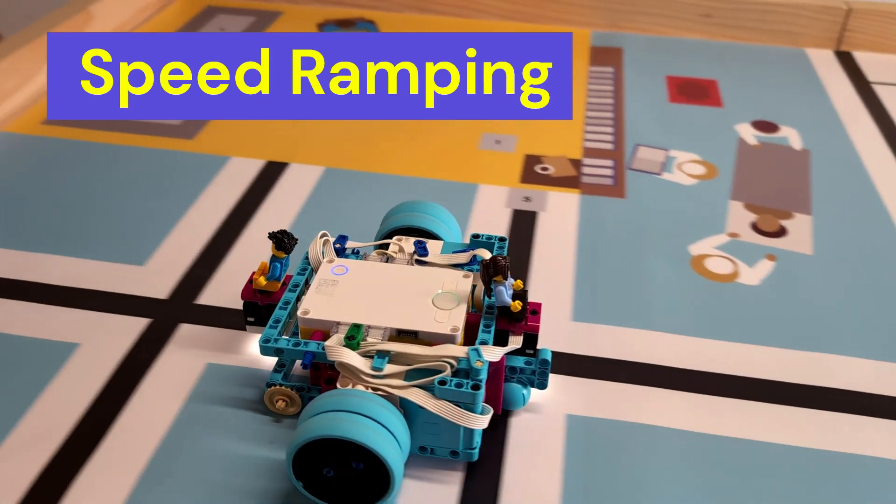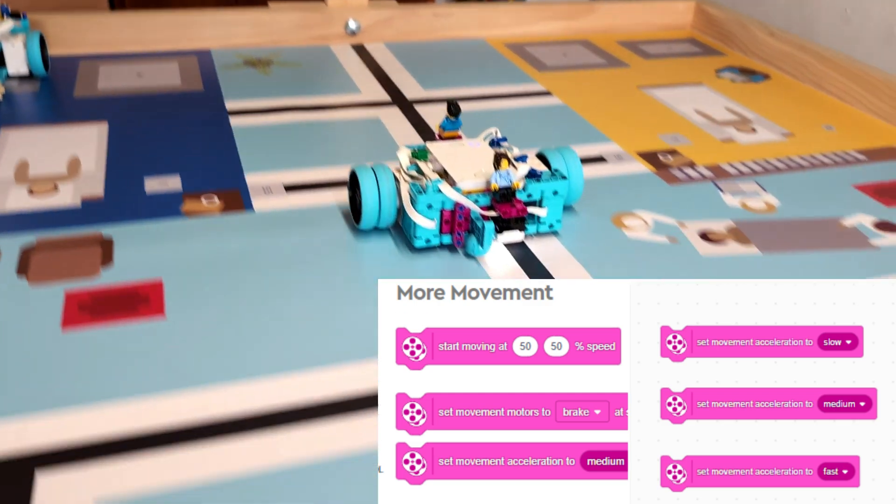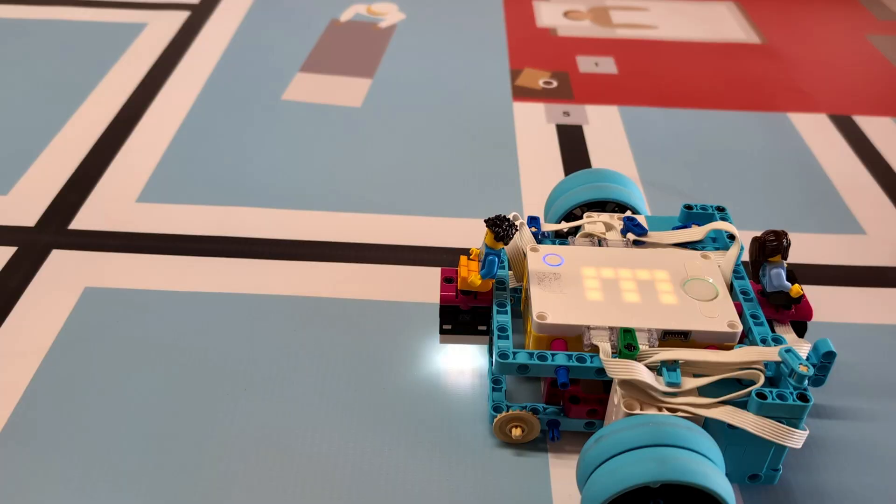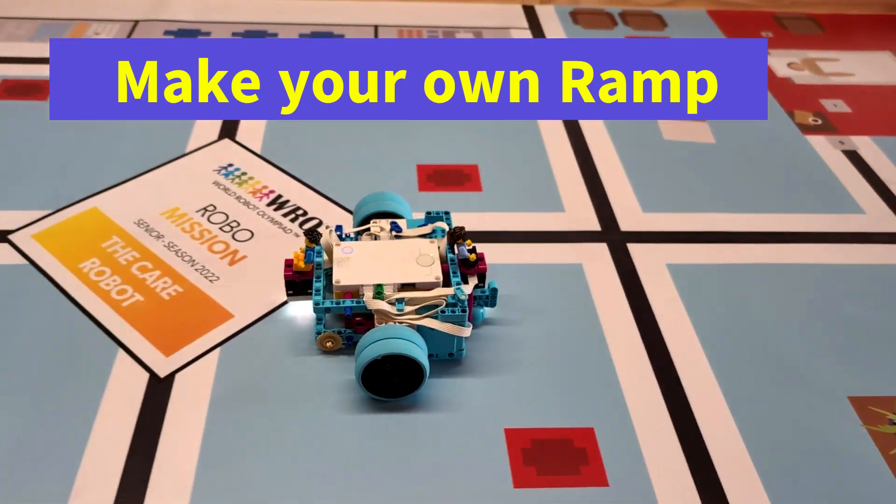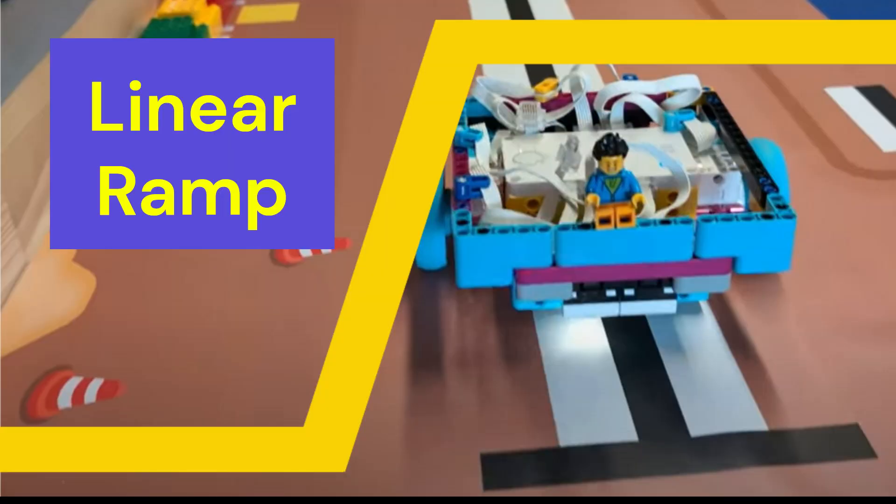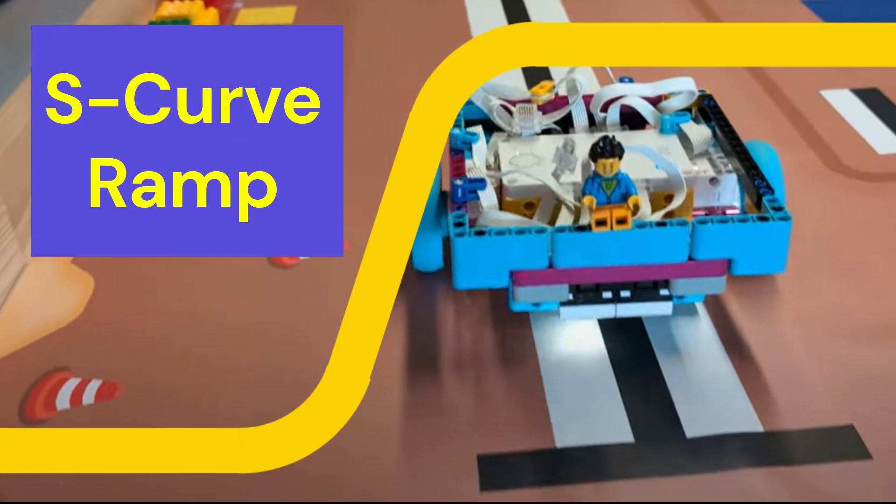You can do this simply by using the acceleration setting in move movement, but for greater flexibility you can make your own ramp function. This can be a simple linear ramp or an S-shaped ramp which gives a softer start and finish.